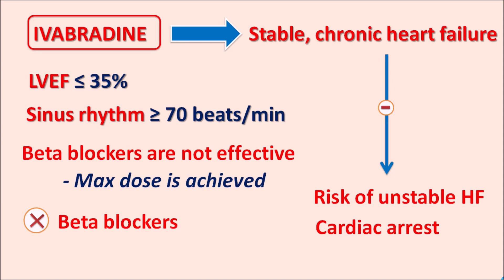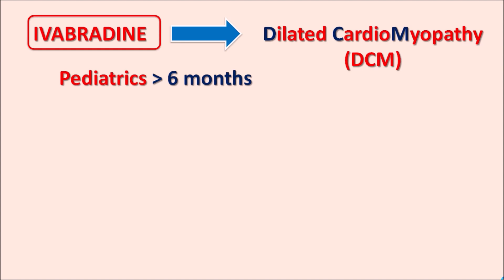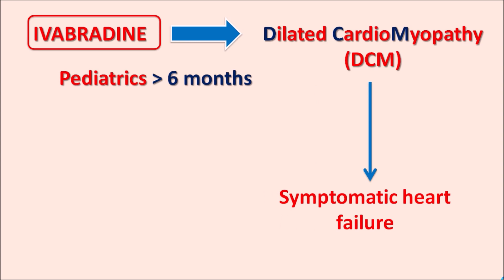For instance, beta blockers at high dose produce bronchospasm and are contraindicated in asthmatic patients. In such patients or any other contraindication of beta blockers, Ivabradine can be given to control heart rate. This drug can also be used in pediatric patients greater than 6 months of age. In these pediatric patients, dilated cardiomyopathy (DCM) can be observed, leading to symptomatic heart failure with elevated heart rate, which is again controlled by Ivabradine.